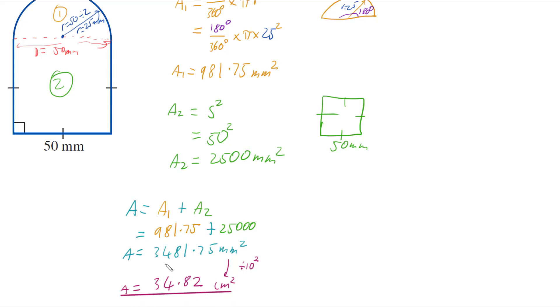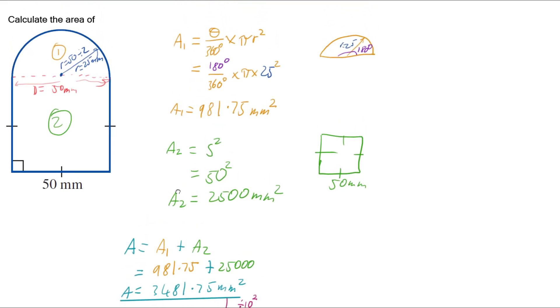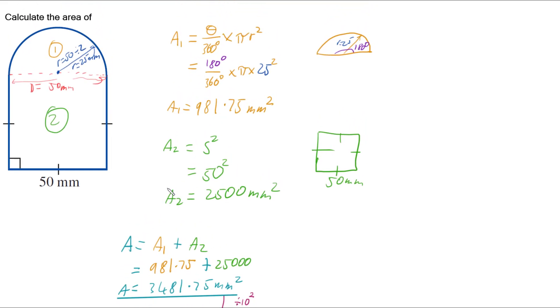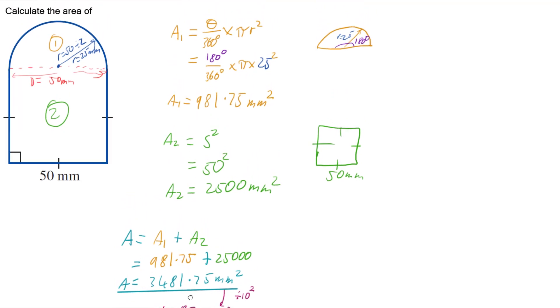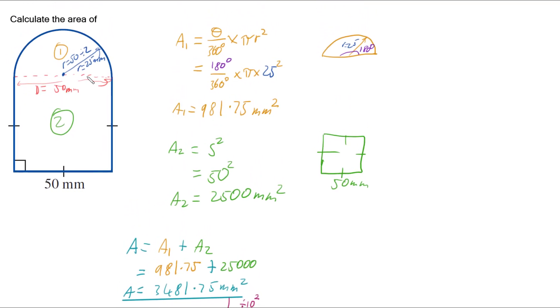And so that's it. We've got our answer. The area of this shape is 3481.75 millimeters squared, or 34.82 centimeters squared. And we got there by splitting it into two shapes, half a circle and a square, working out the areas of those two and adding them together.